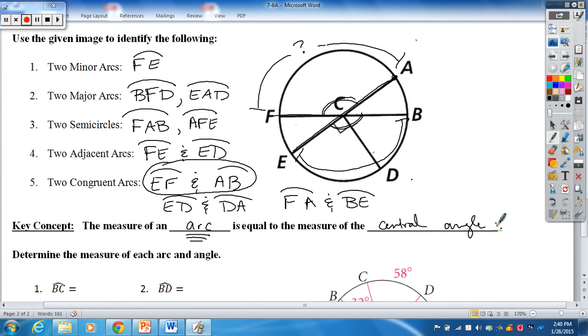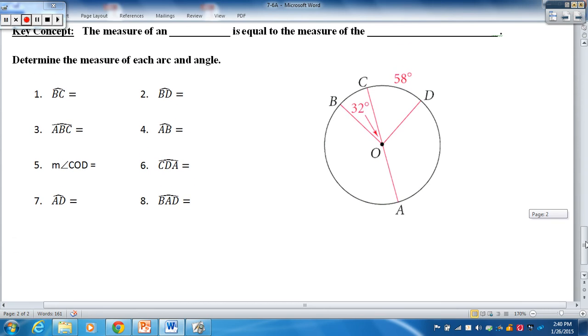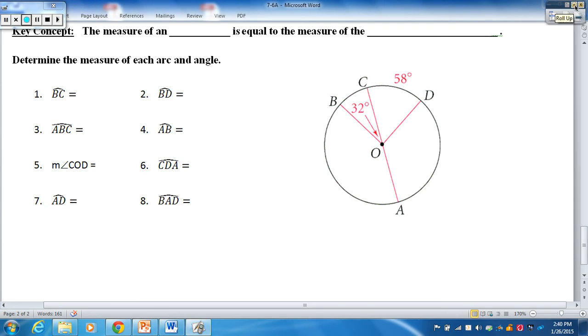Now, if that made sense to you, try to do the last section on your own. Again, remember, the central angle equals the arc measure. And, you know, I'm going to walk through this here in just a second, see if you can pause and figure out the measurements of all the parts that we're asking for up there.